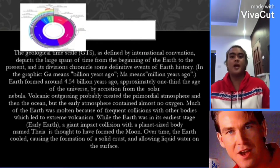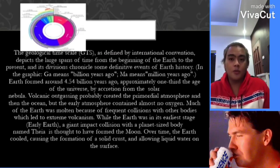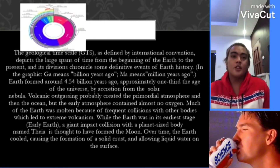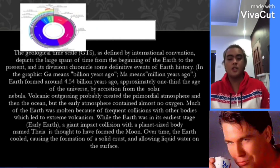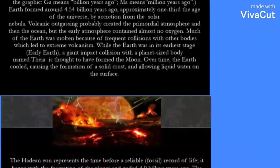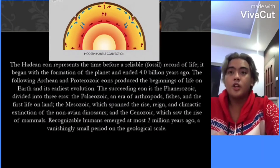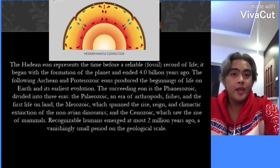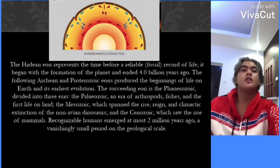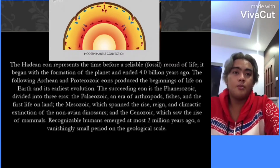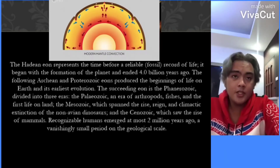While the Earth was in its earliest stage, a giant impact collision with a planet-sized body named Theia is thought to have formed the Moon. Over time, the Earth cooled, causing the formation of a solid crust and allowing liquid water on the surface. The Hadean Aeon represents the time before a reliable fossil record of life; it began with the formation of the planet and ended 4.0 billion years ago. The following Archean and Proterozoic Aeons produced the beginnings of life on Earth in its earliest evolution.